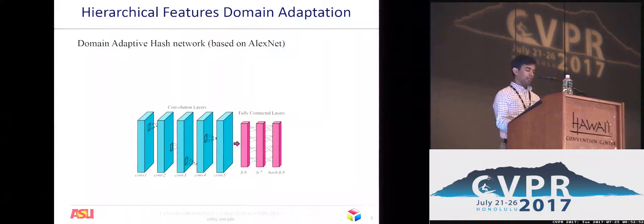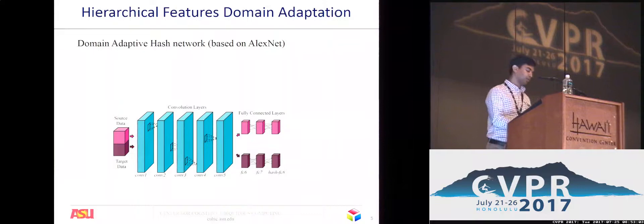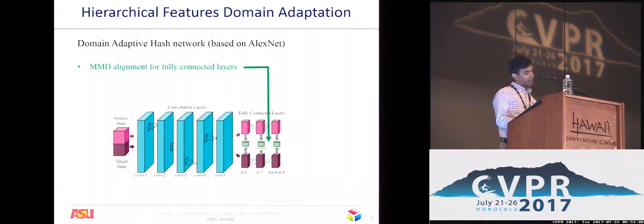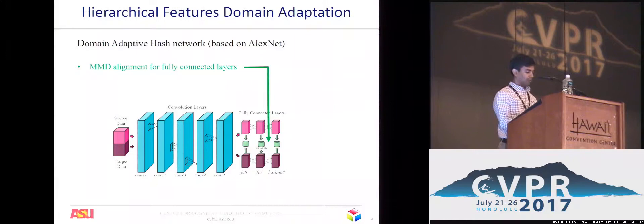We implement the domain adaptive hash network using AlexNet as a base network and fine-tune it. The network outputs hash values in the last layer. Every batch has both source and target images. The network minimizes three loss functions. The maximum mean discrepancy (MMD) measures the difference between two distributions. We use the MMD to align the feature distributions of the source and target in the fully connected layers of the network, deploying a linear online variation of the MMD to estimate the distribution difference over batches of data.